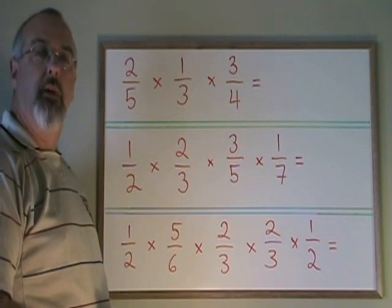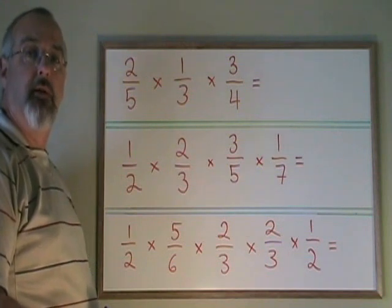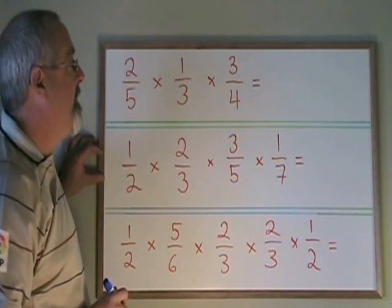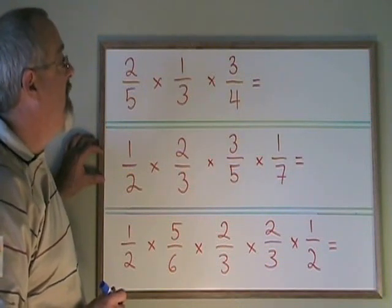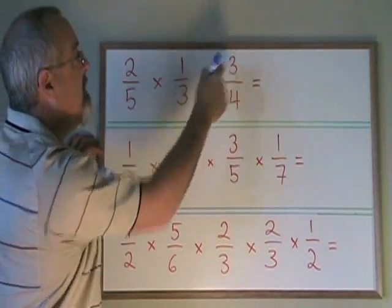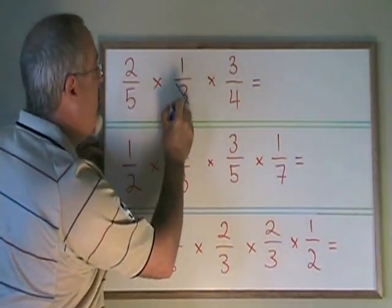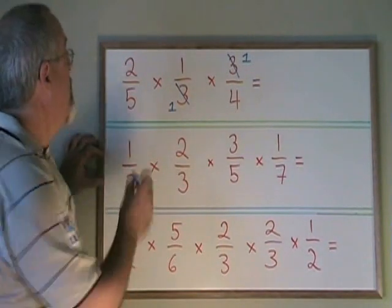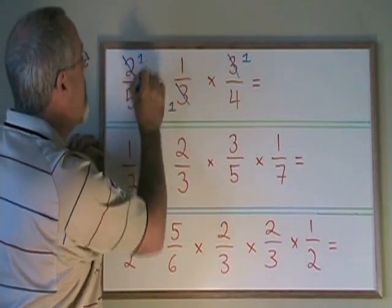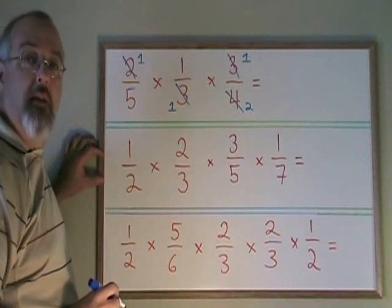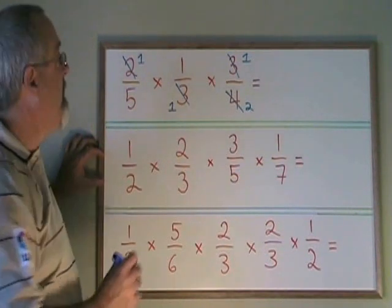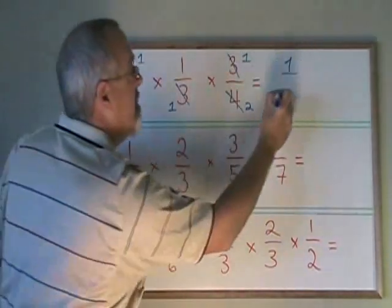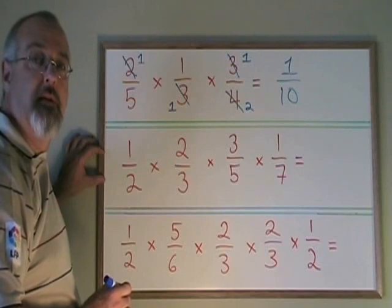When we multiply fractions, we can multiply more than two fractions at once, and we can cancel while doing so. Here we have 2/5 times 1/3 times 3/4. We see that the 3 on the bottom and the 3 on the top can be cancelled, leaving 1s. We also have a 2 on the top and a 4 on the bottom sharing a common factor of 2, so we cancel: 2 divided by 2 is 1, and 4 divided by 2 is 2. Now multiplying: 1 times 1 times 1 times 1 equals 1 on top, and 5 times 1 times 2 equals 10 on the bottom. My final answer is 1/10, and it cannot be simplified further.